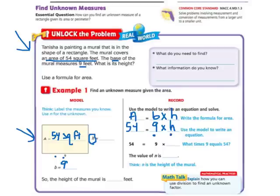So then I think to myself, 9 times what will give me 54? 9 times 6 is 54. So the value that we're missing is 6. The height is 6. The value of H is 6.